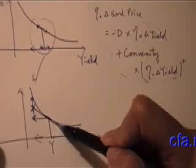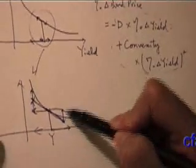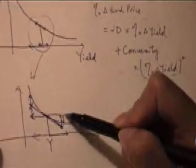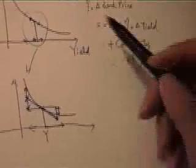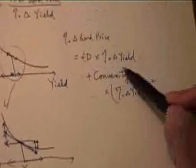Here is the straight line predicted by the duration alone. It will predict that there will be a very big change of the bond price. But with the convexity, it will accurately predict that the decrease in the bond price is less. So, in summary, in order to calculate the percentage change of the bond price, we have to use both the duration and convexity. That's it.